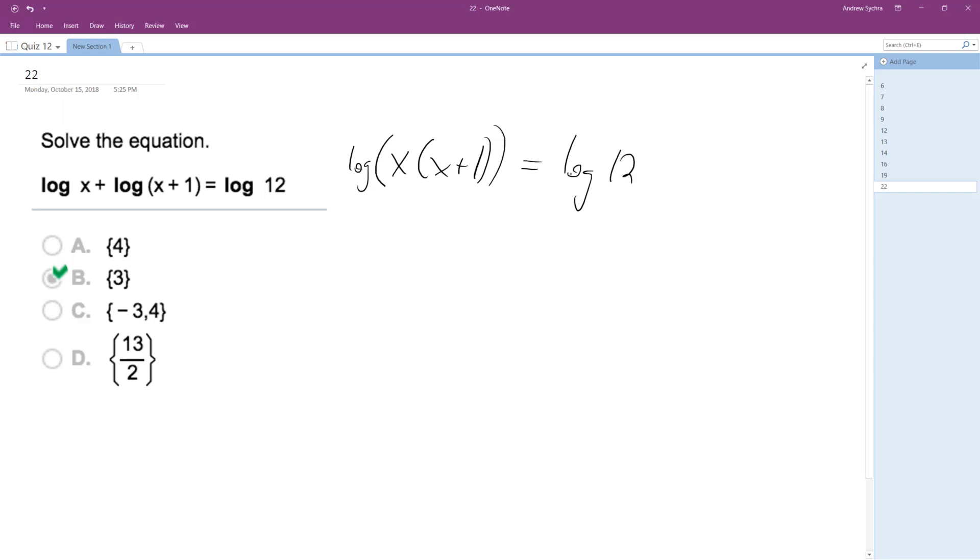Because they all share the same log now, we can just drop it. So we get x squared plus x equals 12. Moving 12 over, we get x squared plus x minus 12 equals zero.